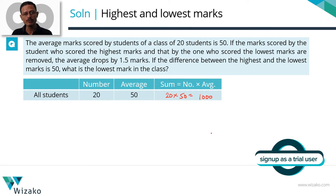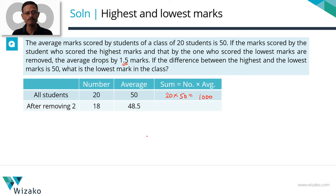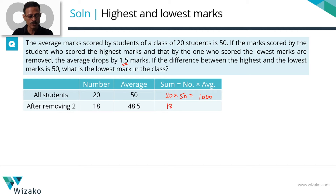Now we are removing marks of two students — the one who scored the highest and the one who scored the lowest — so we will be left with 18 students. The average drops by 1.5, so the new average is going to be 48.5. The sum of marks for these 18 students is 18 into 48.5, which equals 873.